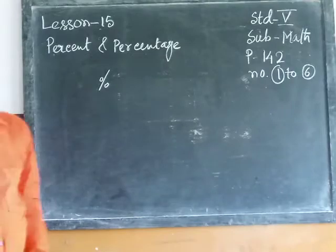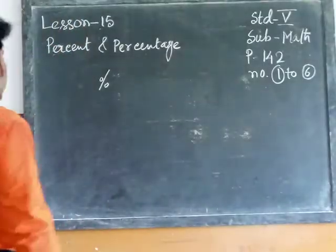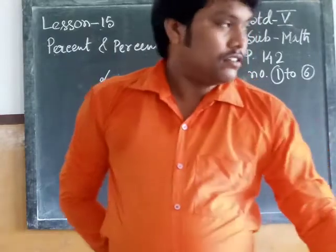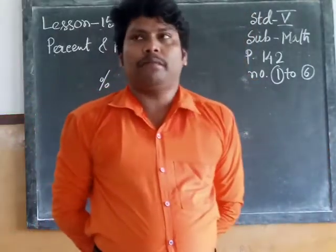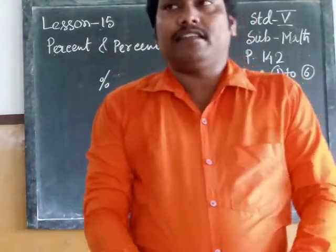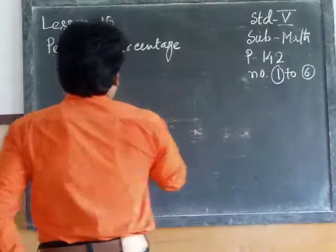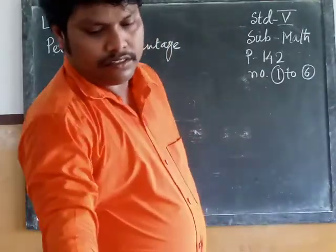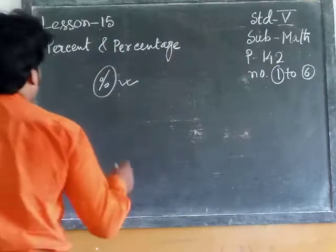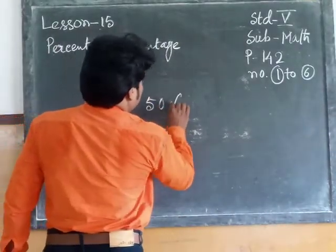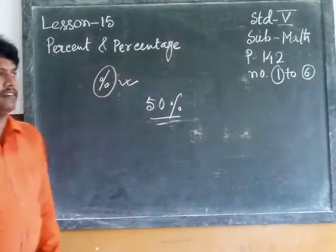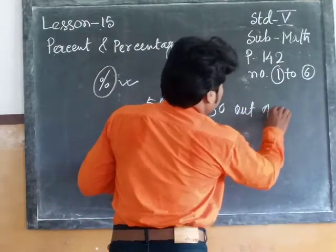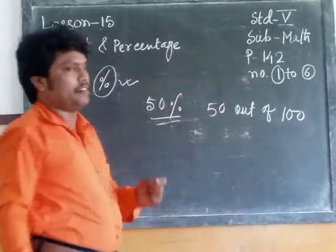This is the symbol of percent. Percent means a value which is out of hundred. The word percent means out of hundreds. How much out of hundreds? It is symbolized by this symbol. For example, fifty percent — that means fifty out of hundreds.